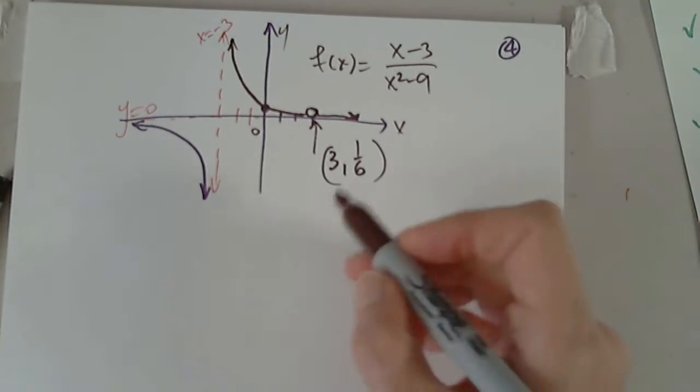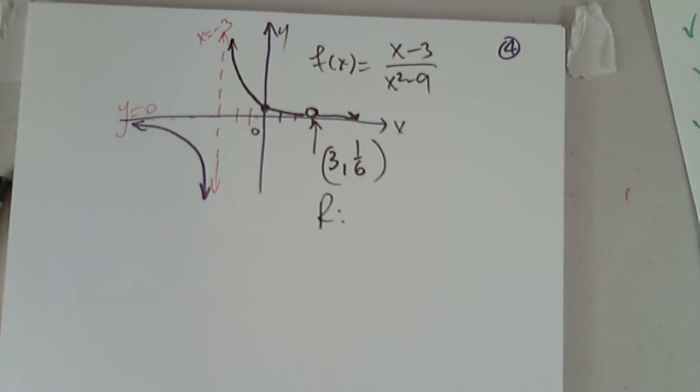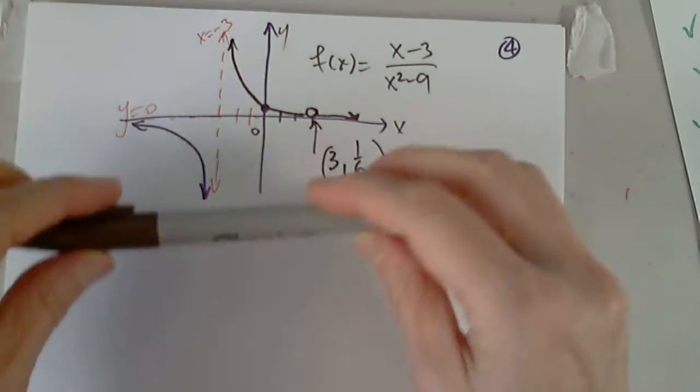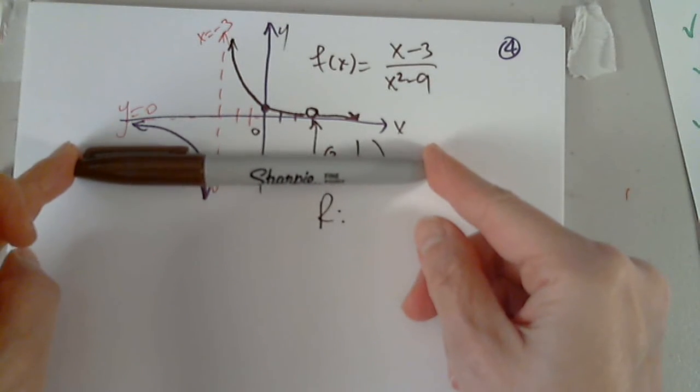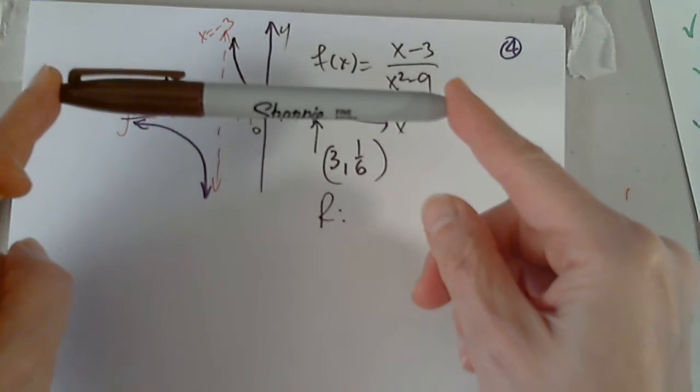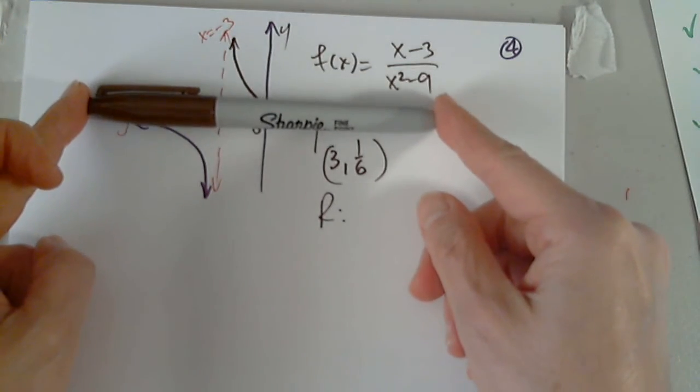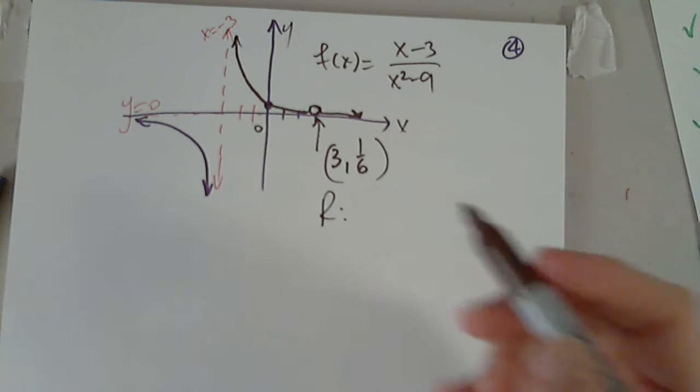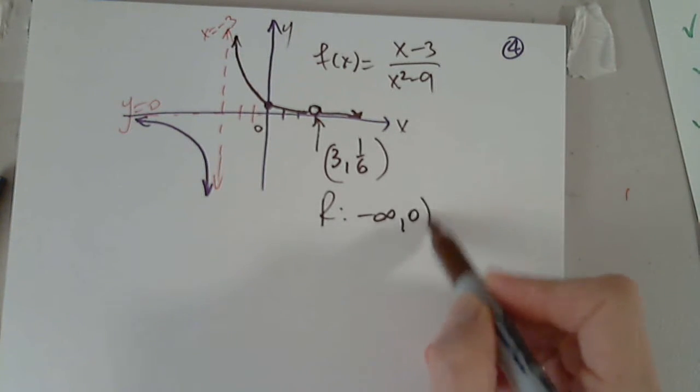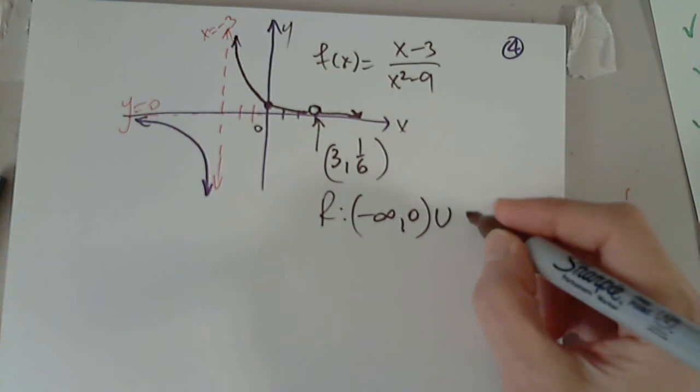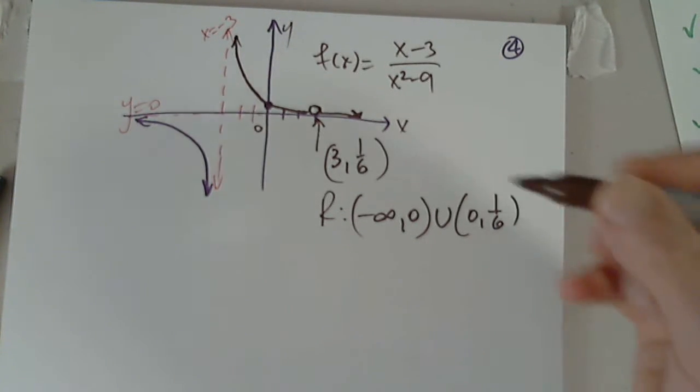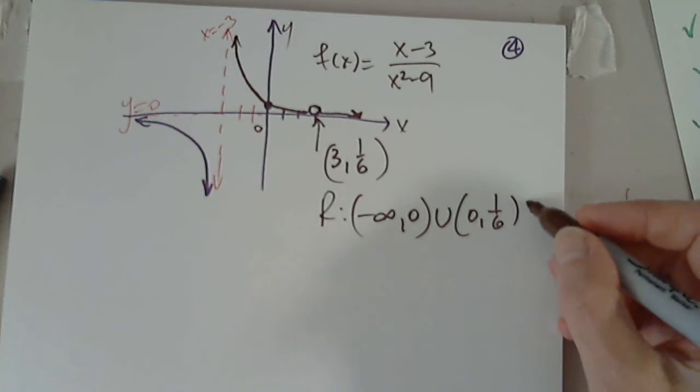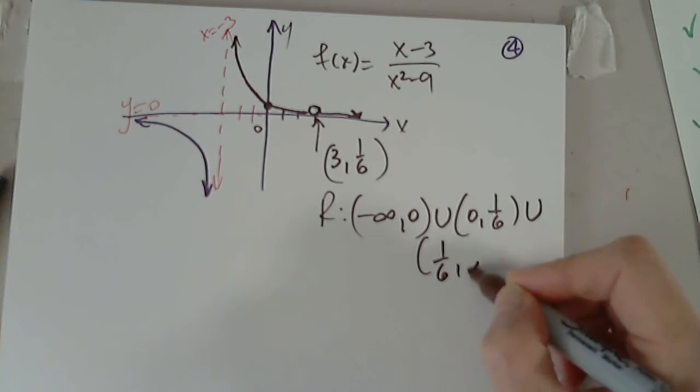And this is the hole 3 comma 1 over 6. Can anyone identify the range for us? Carefully take it from negative infinity. So from negative infinity to 0, that's an oops, union 0 to 1 over 6, union 1 over 6 to infinity.